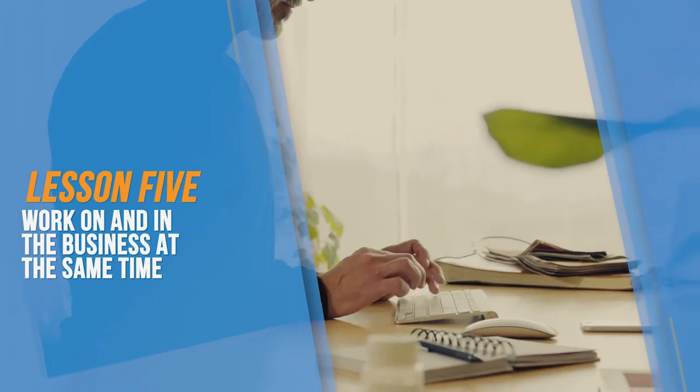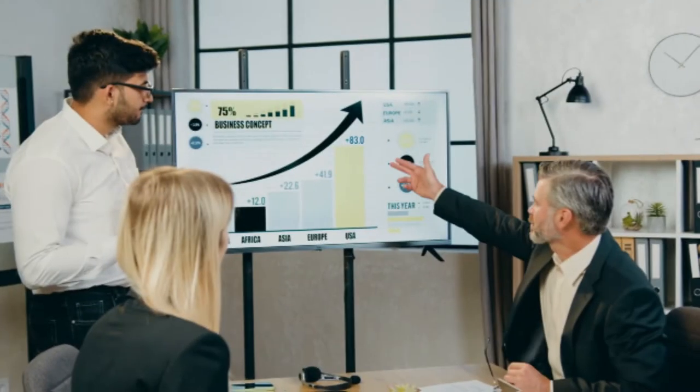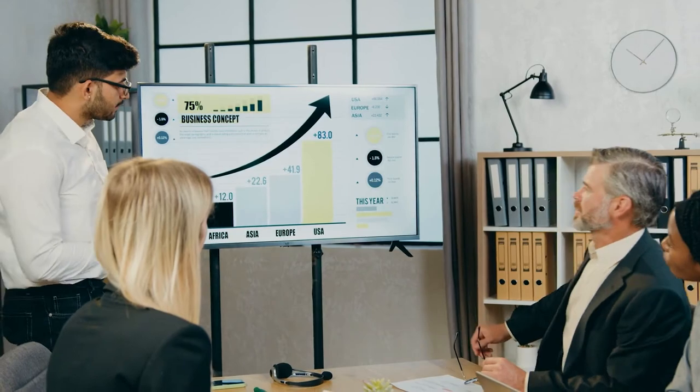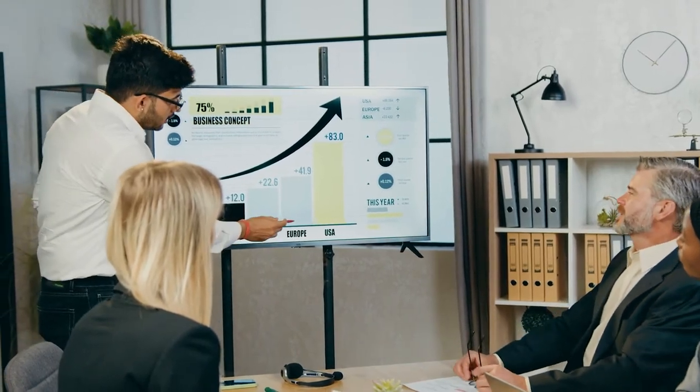Lesson 5: Work on and in the business at the same time. At the start of the business, the founder or CEO is expected to have their eyes set firmly on the strategy and growth plan. Afterward, their attention is driven more towards how to provide the best service to its market.